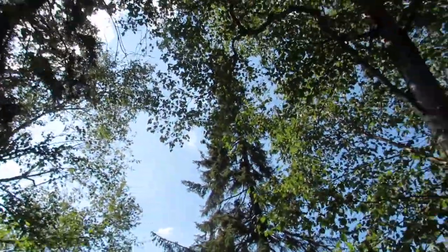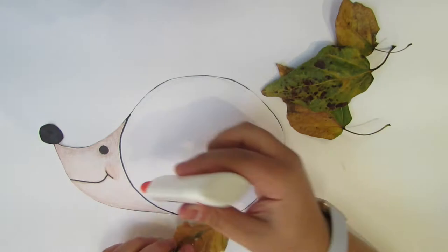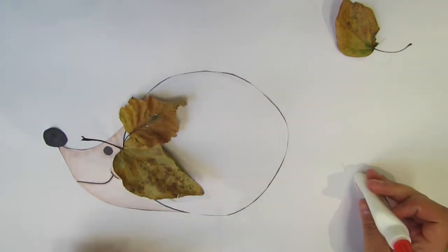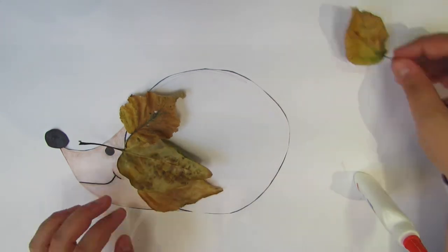Here is where the nature comes in. Gather your leaves from outside and glue them onto the body of your hedgehog. We wanted our hedgehog to have many different colored leaves.